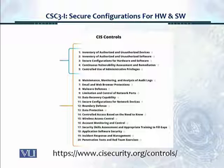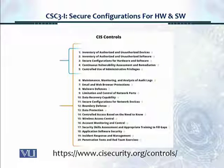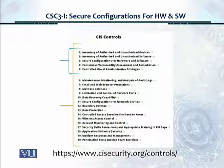The family for the first 10 controls is systems. For controls 11, 12, and 13, the critical security controls belong to the network family. Control 14 is related to applications. Control 15, wireless access control, is again network, and then all the way from 16 to 20 these belong to the application family. So we have three types of families for these 20 security controls: systems, network, and application.